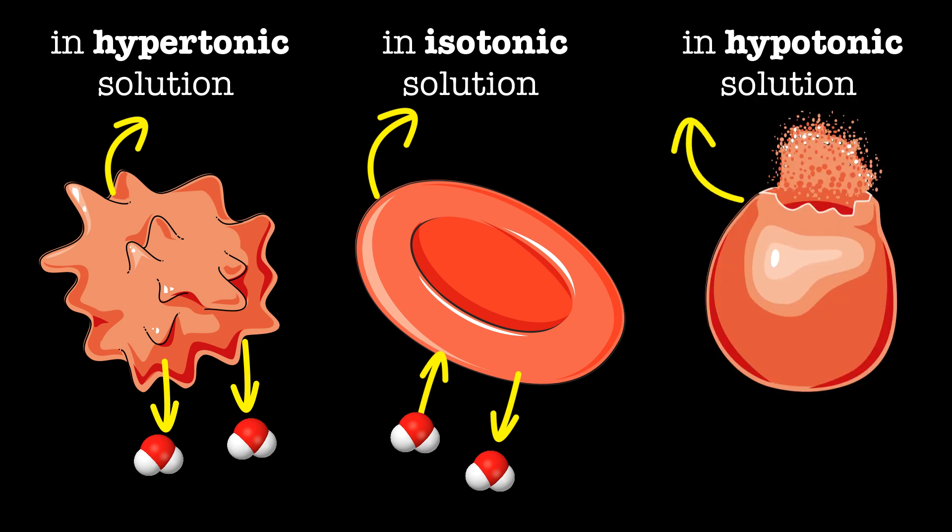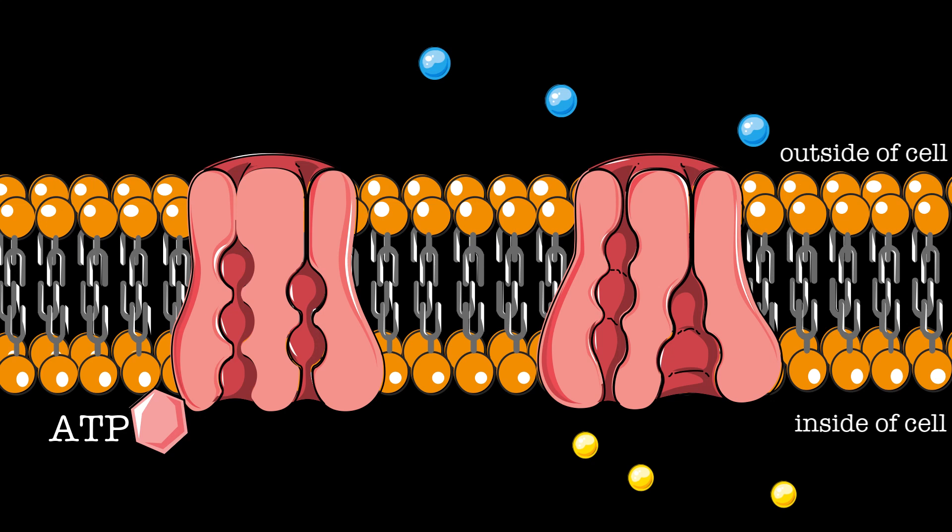When a cell is placed in a hypotonic environment, water will enter the cell and the cell will swell. Adenosine triphosphate (ATP) is the universal energy currency of the cell. ATP is used to alter the structure of protein channels to move these molecules across the membrane against the concentration gradient. This is referred to as active transport.